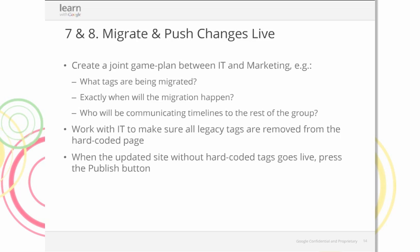Steps seven and eight are the last steps in the migration, requiring both marketing and IT teams to work together. They need to understand what tags need to be migrated, when the migration will happen — whether site-wide or in portions — and the timeline. Once you're happy with the configuration, it's a matter of simultaneously removing hard-coded tags and publishing the changes from within Google Tag Manager itself.